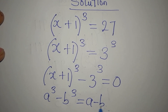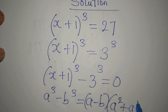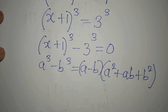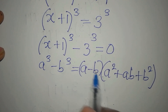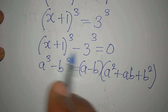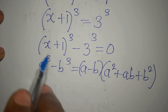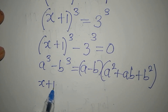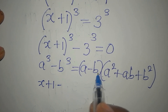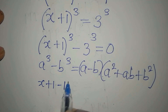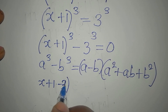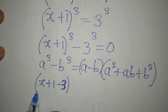Recall that a³ - b³ = (a - b)(a² + ab + b²). We are going to apply this here. Our a is (x + 1) and our b is 3.